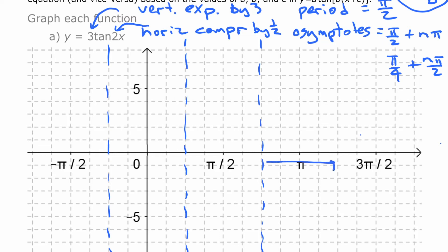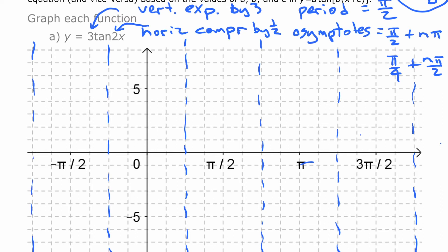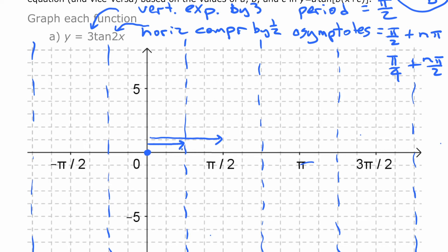We can draw those asymptotes on the graph — there's one here, one there, and one more on the other side. That's the main feature of a tangent graph. We know a few points along the way. The obvious one to start at is right in the middle: tangent of 0 is 0, and even with these transformations, 3 times tangent of 2 times 0 is still 0. So that point is invariant — it's not going to change.